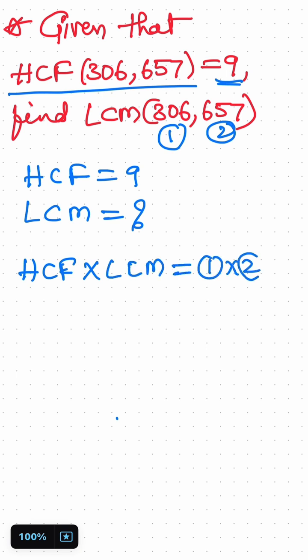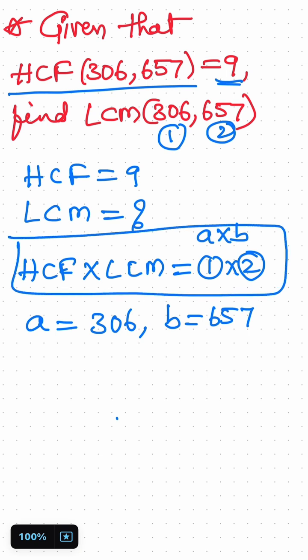Okay, here number one a is equal to 306, b equal to 657. It is also written as product of a and b is equal to HCF of a comma b and LCM of a comma b. Here HCF equal to, applying that HCF is 9, LCM we don't know. Number one is 306, number two is 657.